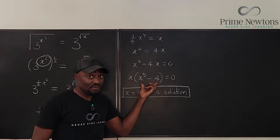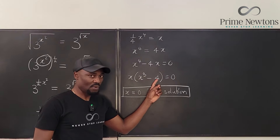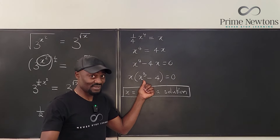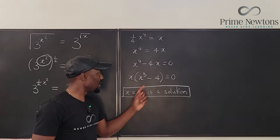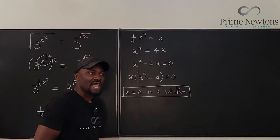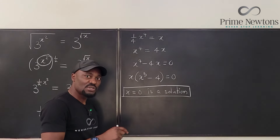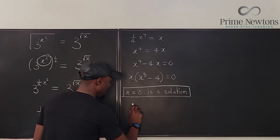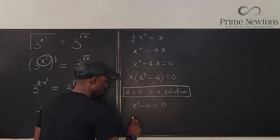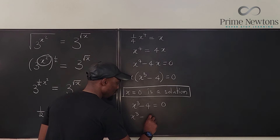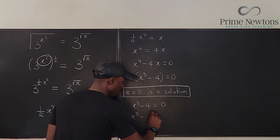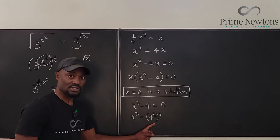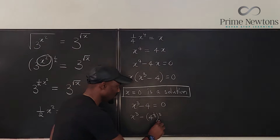Now we need to find the other solutions from x³ - 4 = 0. We're supposed to get three more solutions, for a total of four. We can write 4 as the cube root of 4 cubed, so x³ minus (4^(1/3))³ equals zero. This is now the difference of two cubes.